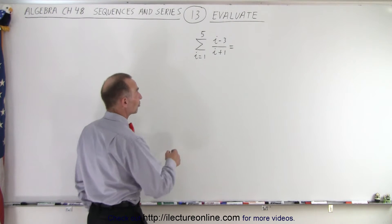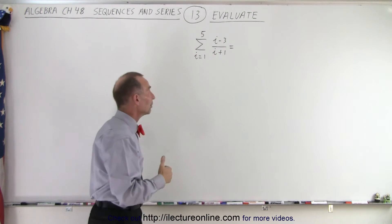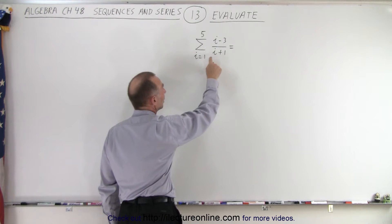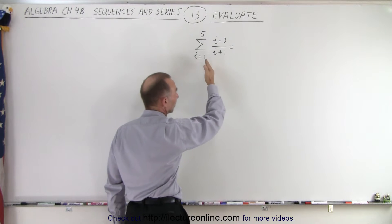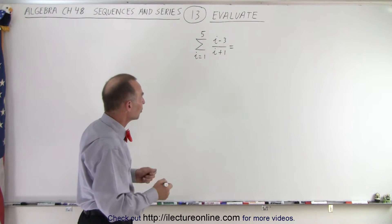Notice there's going to be five terms because i goes from one to five. And this is the formula that we're trying to evaluate. In other words, we're going to take this and we're going to replace i by one. Then we're going to replace i by two. Then we're going to replace i by three and so forth. And add them all up and find one final value. Okay, let's do that.